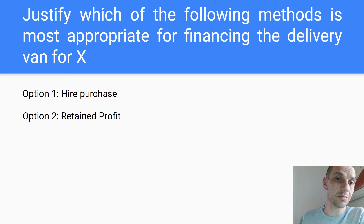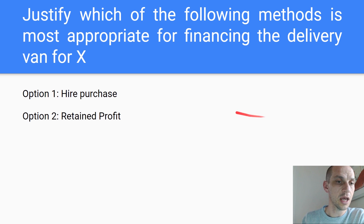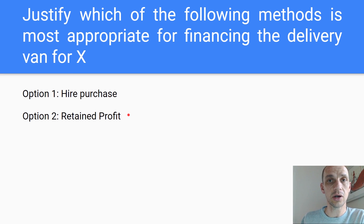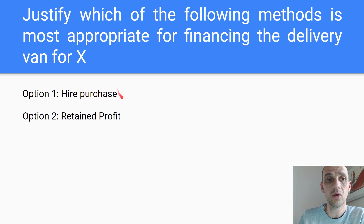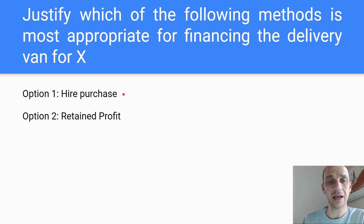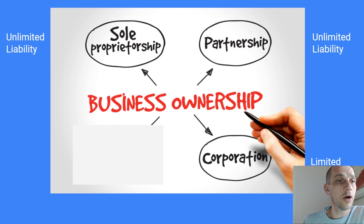Justify which of the following methods is most appropriate for financing a delivery van: retained profits as internal finance — there's no interest to pay; or monthly installments which are easy to budget, but it does mean the firm is taking on debt and there's likely to be some interest involved, and it's not until the final purchase that it's actually theirs — which could take four or five years.